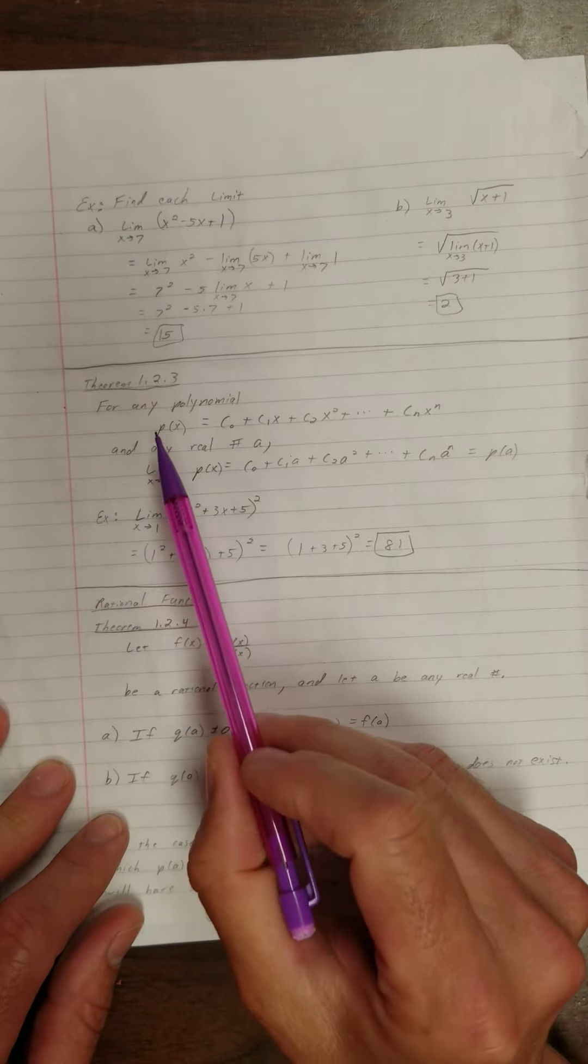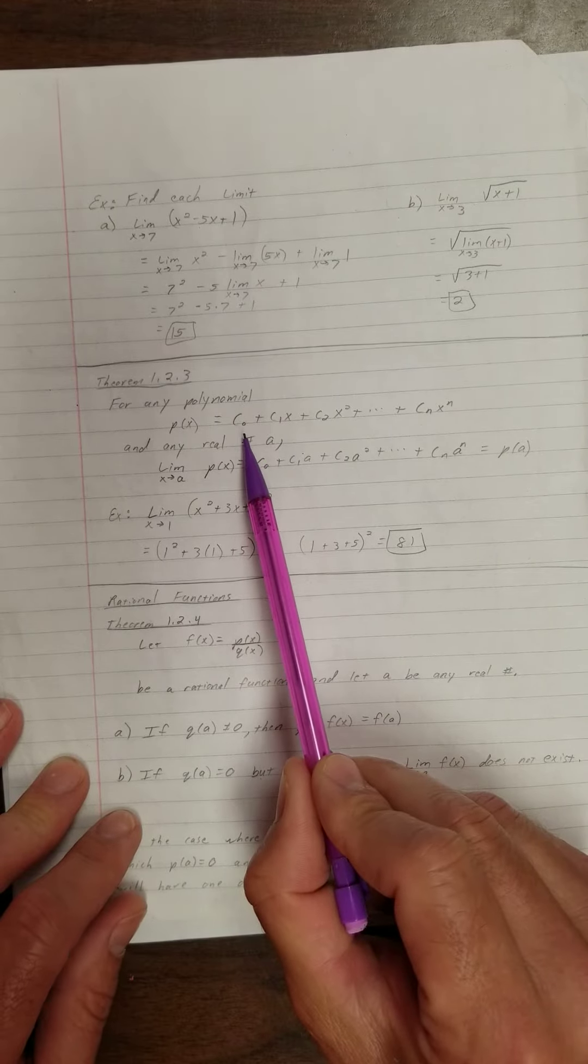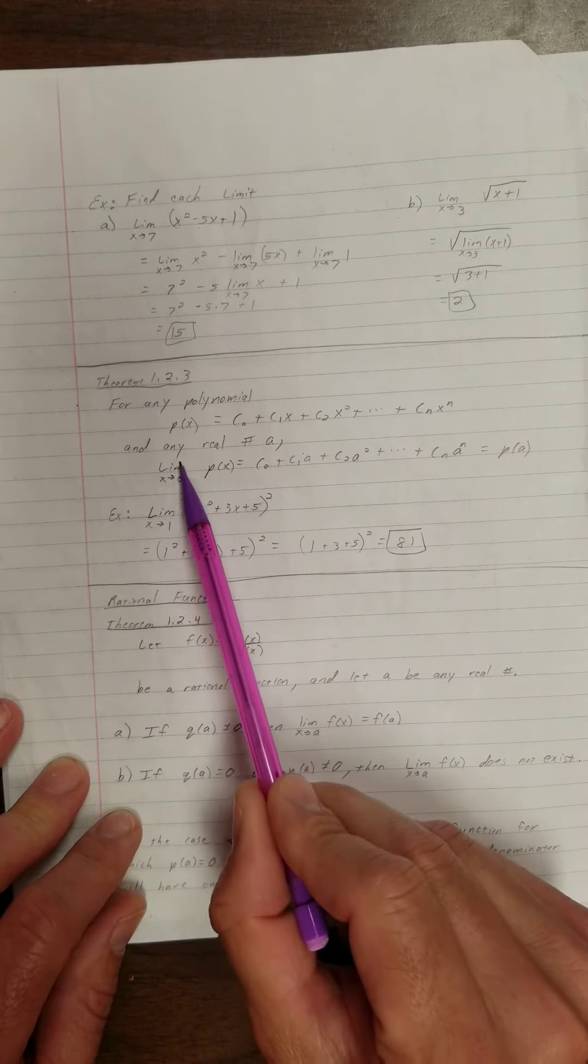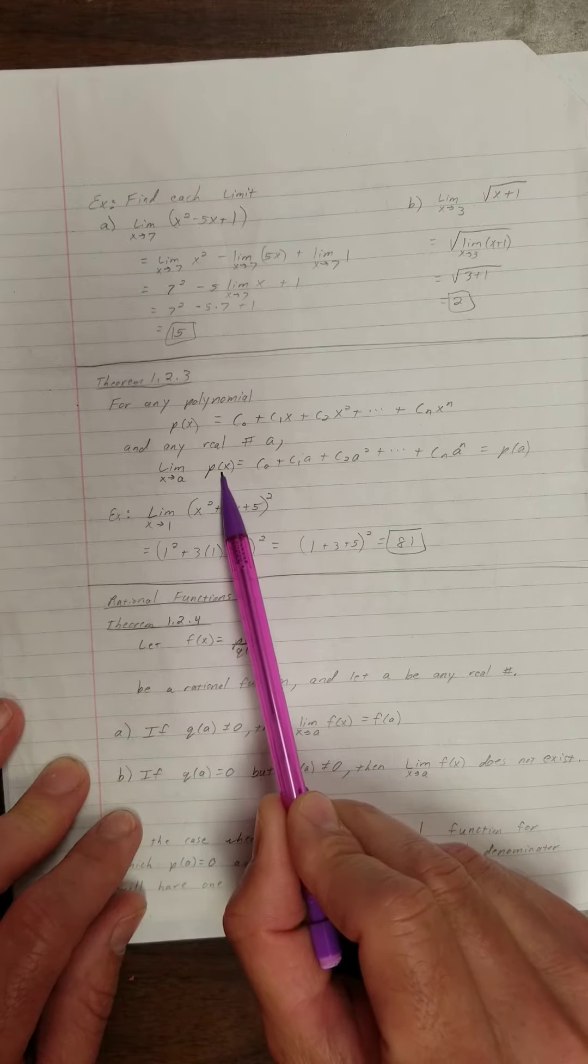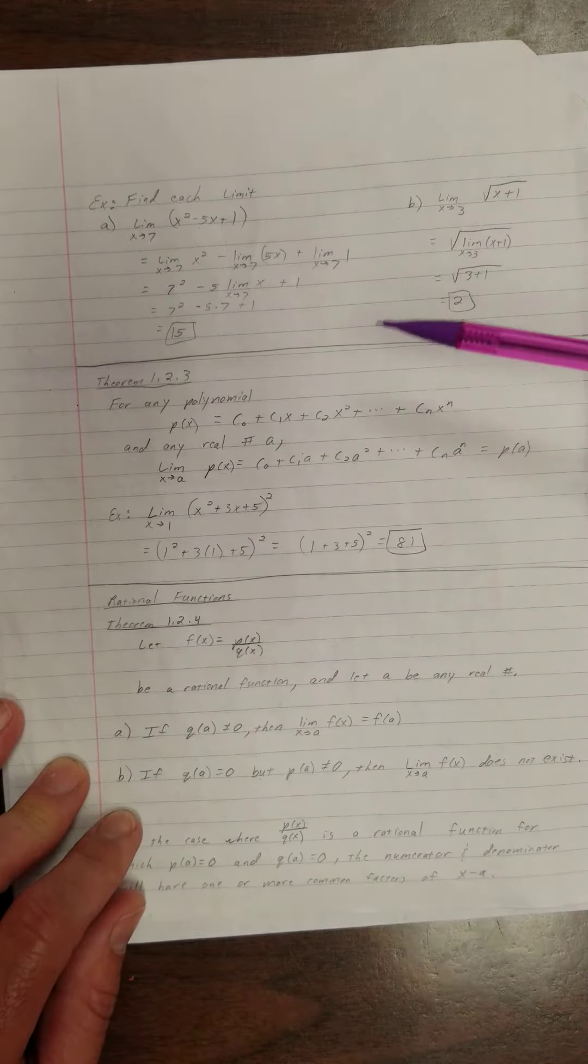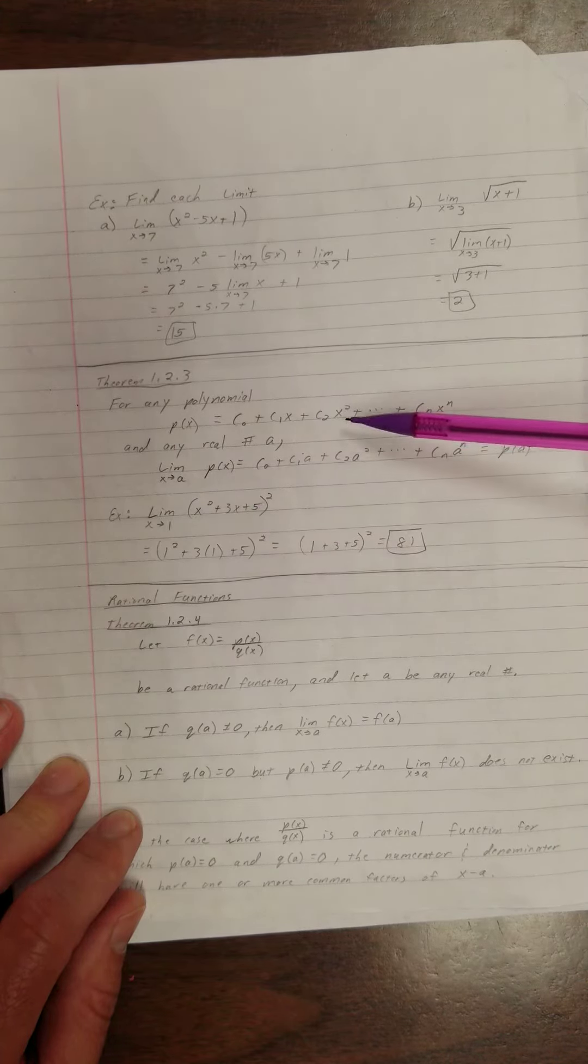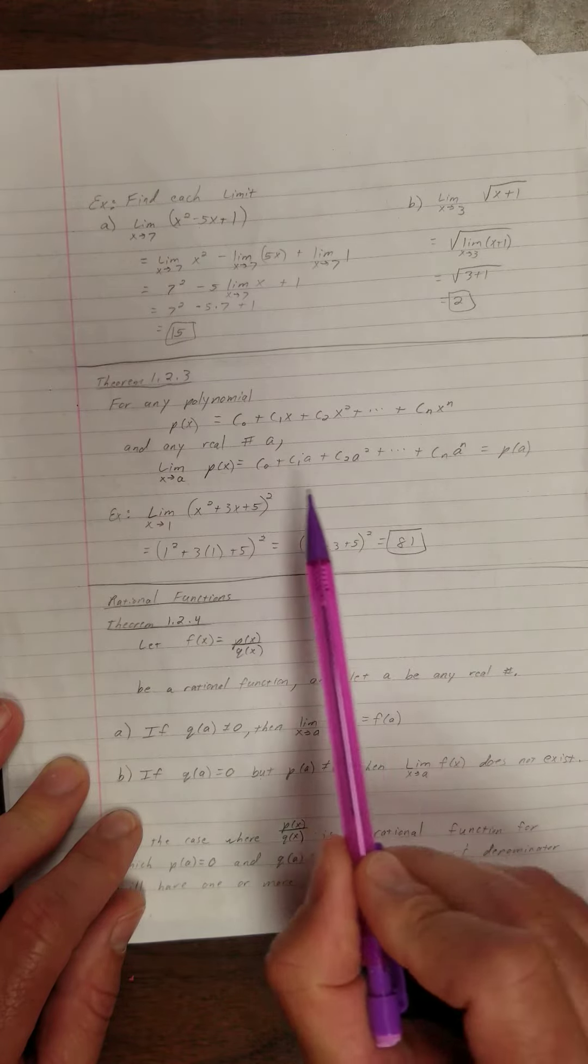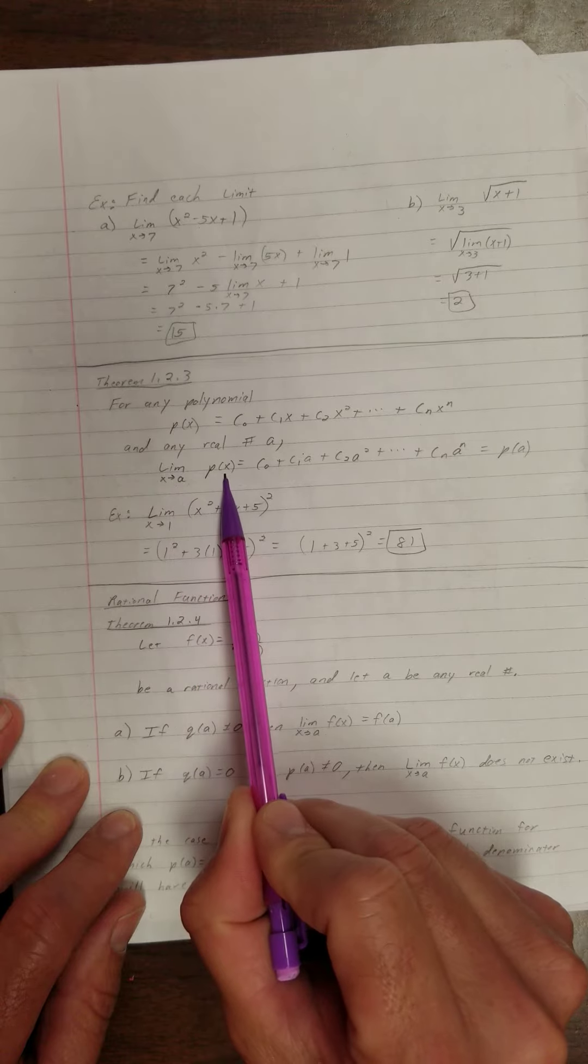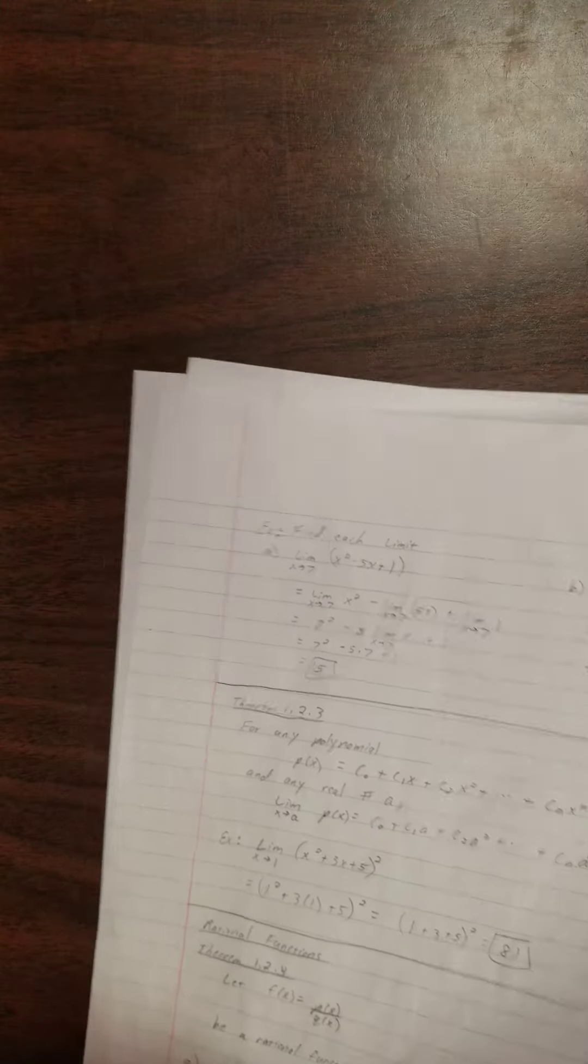Let's continue here. We have a theorem in our book that says for any polynomial, and they just write out the polynomial, and any real number a, the limit as x approaches a of the polynomial, the way you find that, or an easier way to find it, is just sub in for each x that a value. Each x, we're subbing in at a and calculating it. In other words, it's saying the limit as x approaches a of a polynomial is the polynomial evaluated at that number. Alright, so let's see.